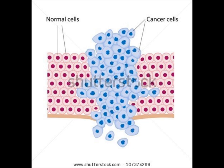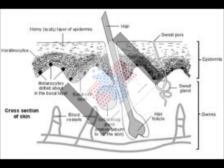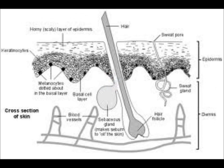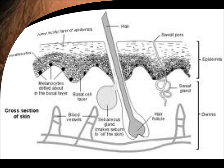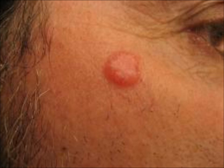Basal cell carcinomas grow slowly, taking months or even years to become sizable. Although spread to other parts of the body is very rare, a basal cell carcinoma can damage and disfigure the eye, ear, or nose if it grows nearby.